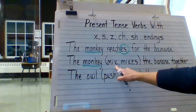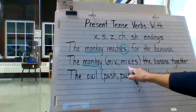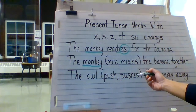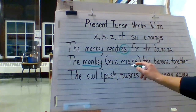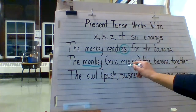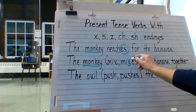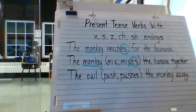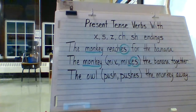So we have: the monkey mix or mixes the banana together. We know we need to have an S on the end because we have one subject. However, since our verb ends in X, we can't just add S. So then our sentence reads: the monkey mixes the banana together.